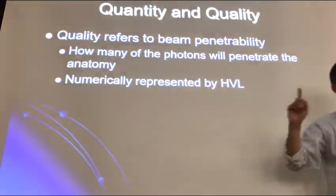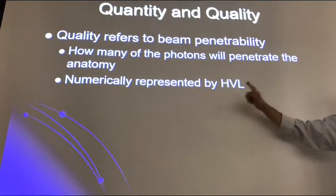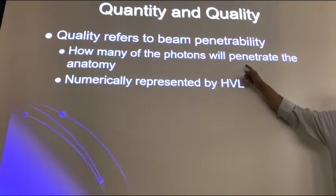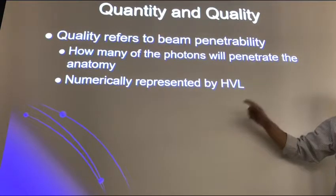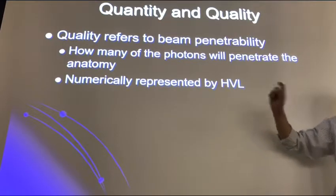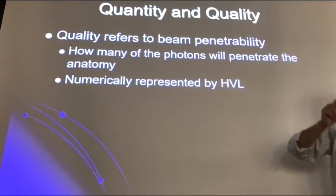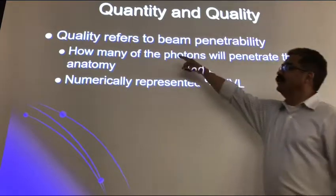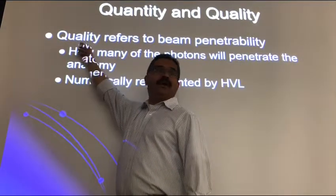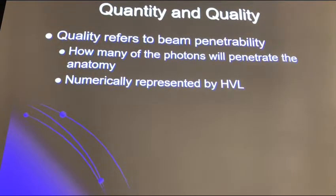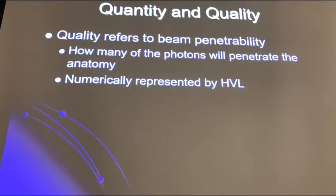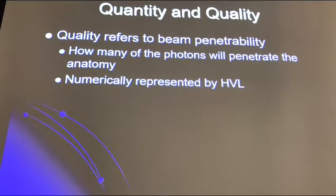Put a red flag here, because it's important to understand: you're measuring quality through quantity. Because the half value layer is the amount of material used to reduce the amount of the beam by half — but it's used to measure quality. When you say 'amount of the beam,' you mean the amount of photons, which is controlled by MAS.